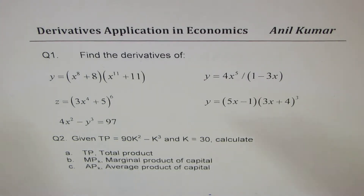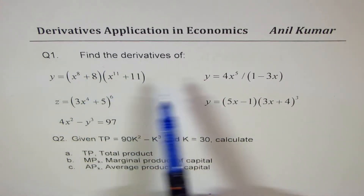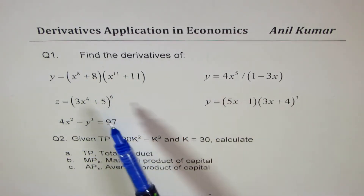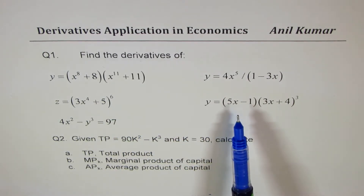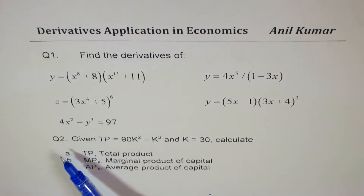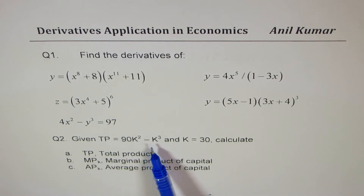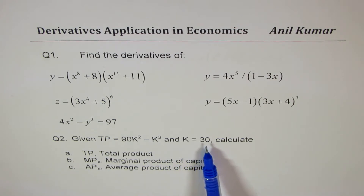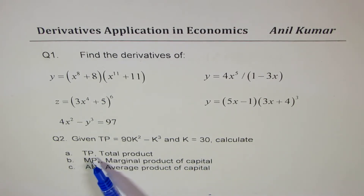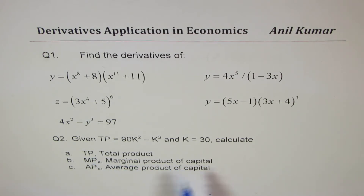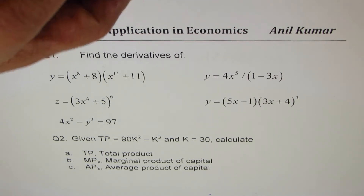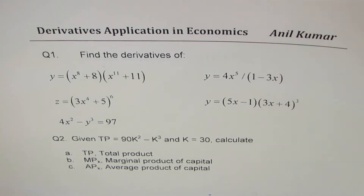Question number one is straightforward. We need to find derivatives of all these functions, applying different rules, and we have to name the rules while we find derivatives. Question number two, we are given TP equals 90k squared minus k cubed, k equals 30. We need to calculate TP (total product), MPK (marginal product of capital), and APK (average product of capital). So let me do my best to answer these questions one by one.